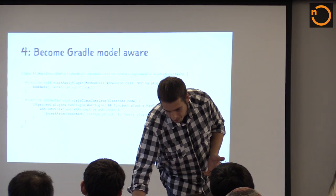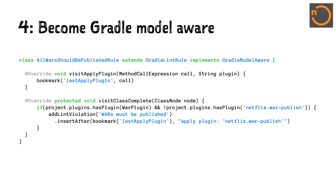Number four: become Gradle model aware. If we implement the special GradleModelAware interface, we can actually use the Gradle model itself, because the war plugin may be applied by some other plugin not visible to us in the source of build.gradle. In this case, we want to look at whether the resolved Gradle model has the war plugin applied and whether we've yet applied the war-publish plugin, and if not, then insert it. So there are four variations on basically the same thing, hopefully showing you a little more complexity.